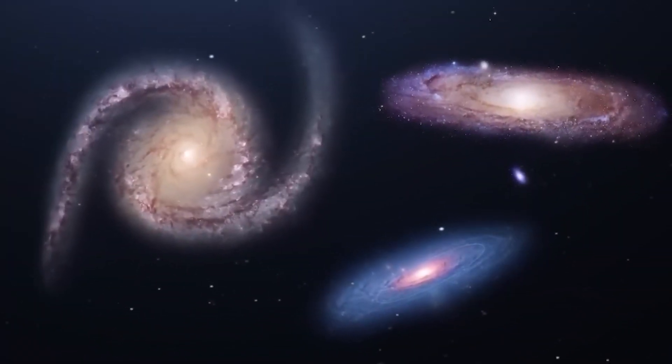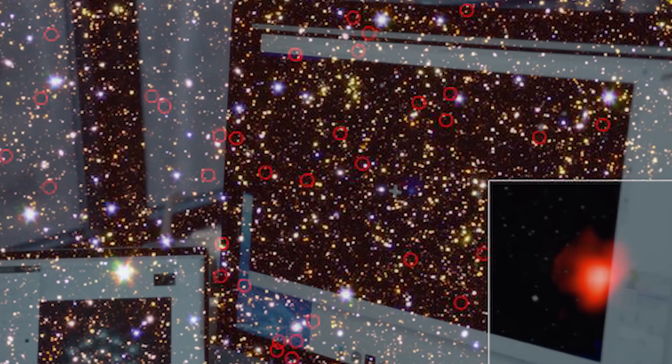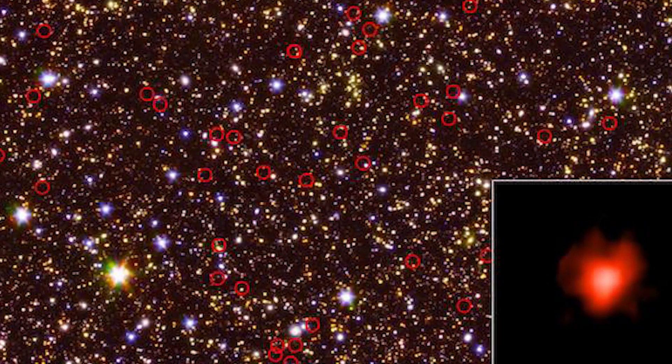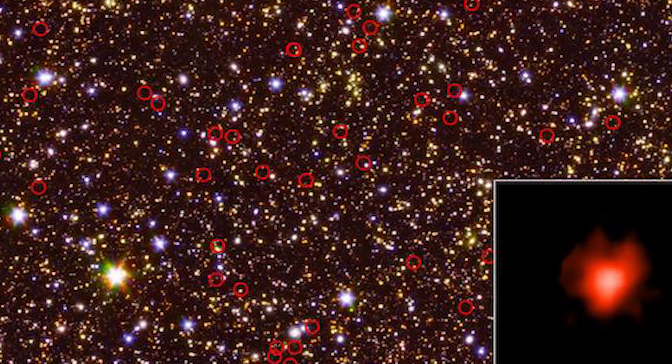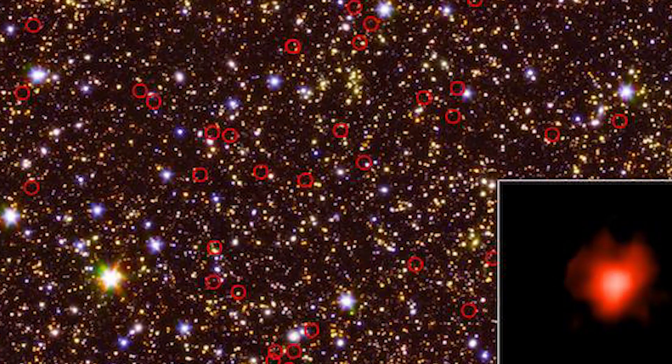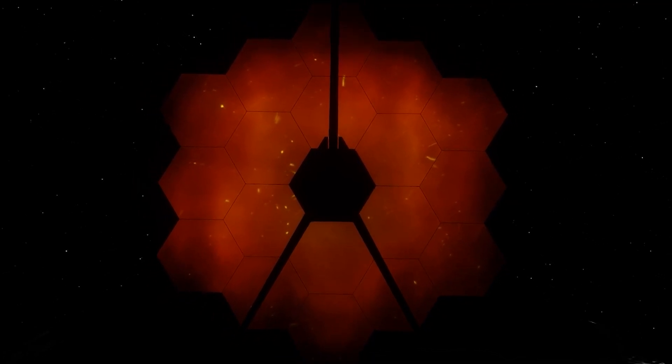Another stunning discovery stumped scientists when researchers found primordial galaxies at the edge of the universe. They were skeptical about their authenticity. Some thought they might be nearby galaxies in disguise, so they shared the data with other scientists around the world. Amazingly, the James Webb Space Telescope confirmed that these ancient galaxies are real.